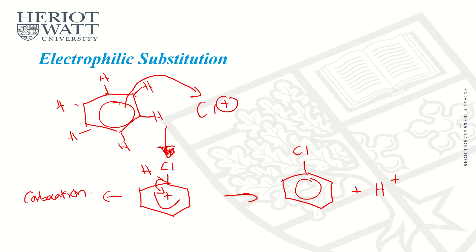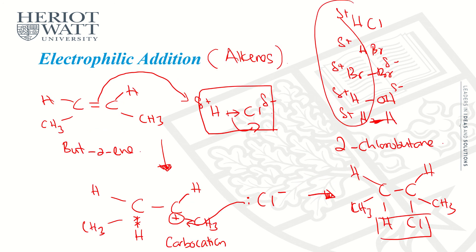This whole process is called electrophilic substitution. Electrophilic substitution is specific to arene compounds, or benzene. Electrophilic addition, as covered earlier, is only for alkenes. So that's all for the two mechanisms.